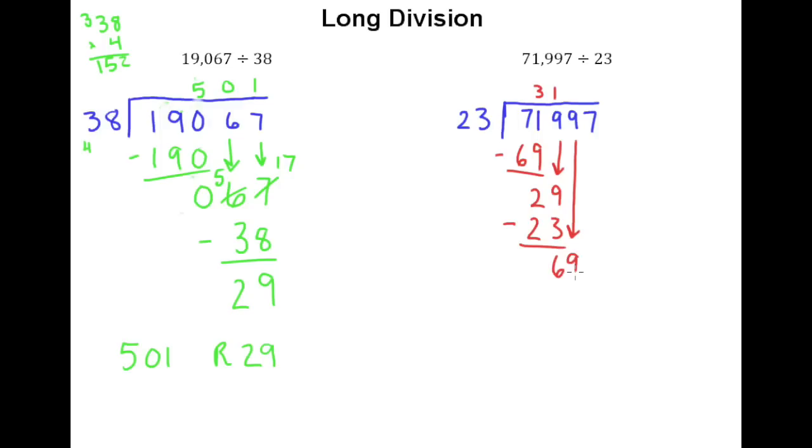Drop the 9 down. And I always like it when this happens in long division, because we've already figured out that 23 times 3 is 69. So I don't really have to think too much. I can just put a 3 up here, put a 69 down there, put a 0, and then we have this 7 to drop down.